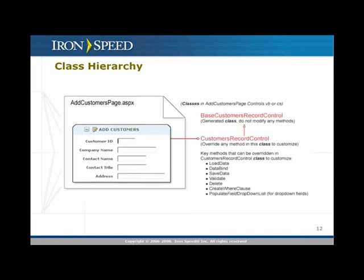Just like the page class, we also generate a record control class. This record control class derives from a base class called the base record control class. Two classes are generated: the customers record control class and the base customers record control class. The base customers record control class is the generated class containing code based on your panel wizard selections. The customers record control class starts out as an empty class. However, you can override any of the methods generated in the base class, and you can often simply copy and paste code from the base section, then make the two or three line changes needed to customize it.